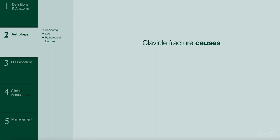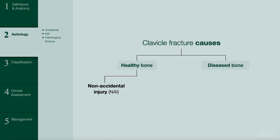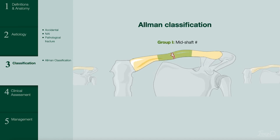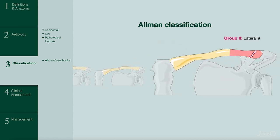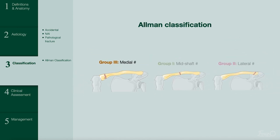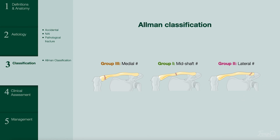Clavicle fractures can occur in healthy bone or diseased bone. In healthy bone, they occur due to non-accidental injuries as a result of abuse, or they may be accidental as a result of a sport or non-sport related injury. The Allman classification is used to classify these fractures and there are three groups. Group 1 are fractures involving the middle third, Group 2 the lateral third, and Group 3 the medial third. Group 1 midshaft fractures are the most common type as there is less soft tissue support, while the lateral and medial aspects have muscular and ligamentous structures that offer support.